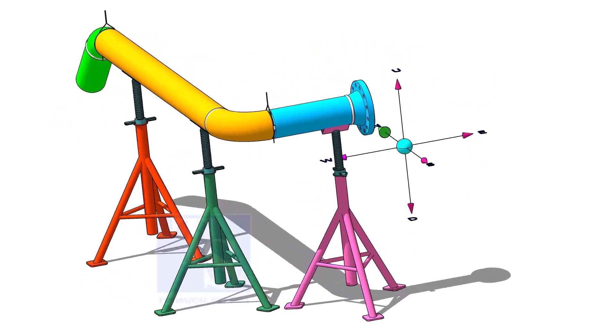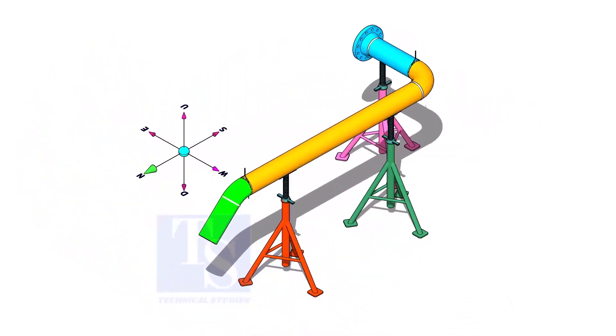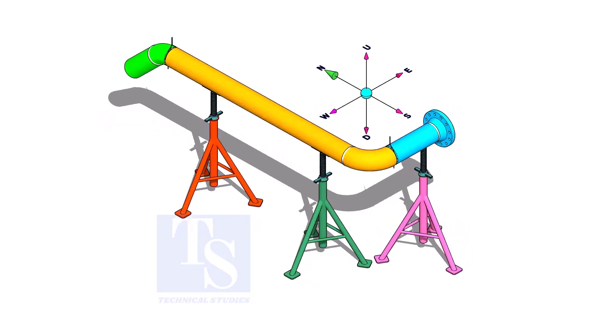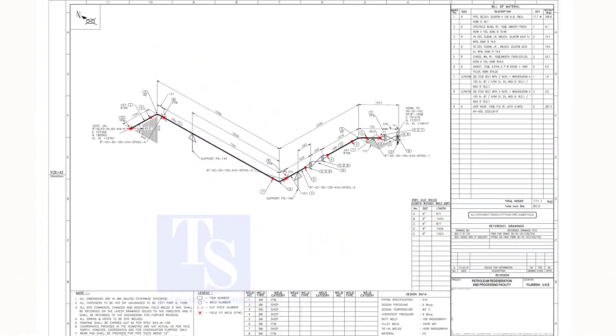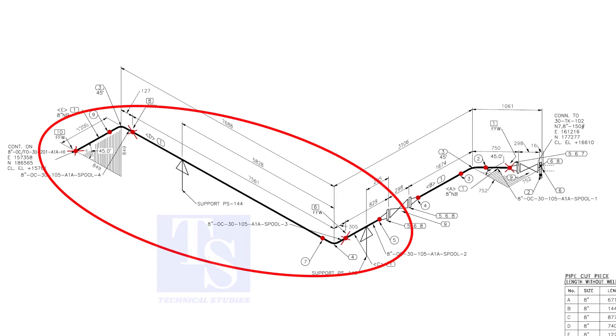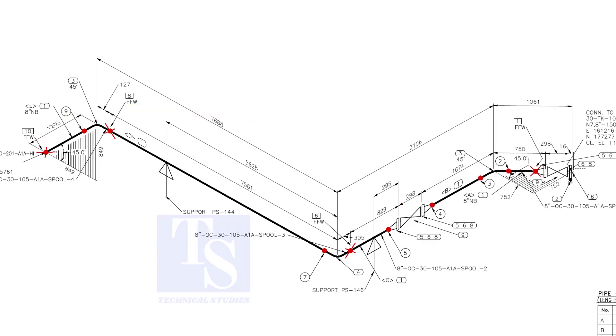This tutorial will be helpful for both experienced and trainee fitters. We are going to fabricate this part of the piping. In this part of the drawing, there are three spools.